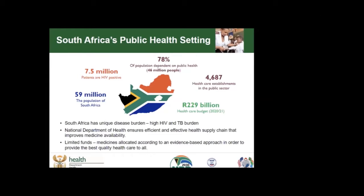An efficient and effective health supply chain that improves medicine availability is critical to address that disease burden. To put this in perspective, we have a population of 59 million people, 78% are dependent on the public health care system, 7.5 million people are living with HIV, and we have a health care budget of 229 billion for the period of 2020-2021. South Africa's unique disease burden shapes the country's national health priorities, health system design, and health funding structures. There are limited funds which must be allocated according to an evidence-based approach to provide the best quality health care for all.